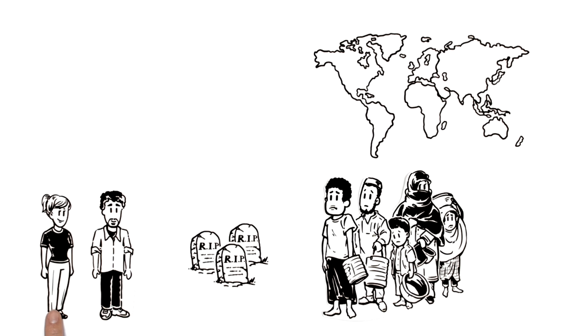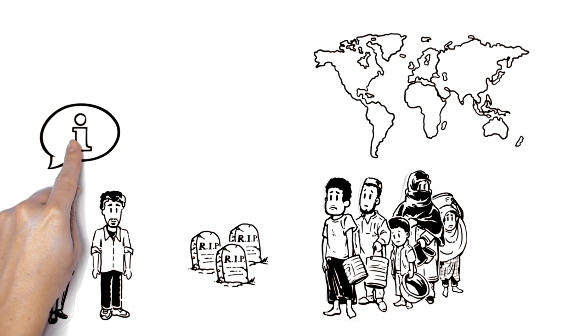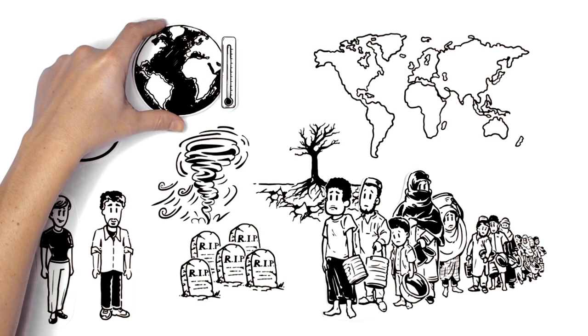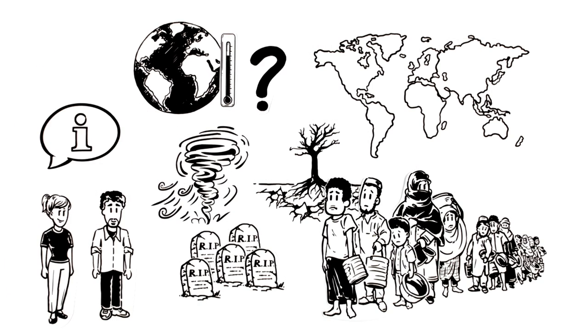Tom asks his friend Mary for advice. She explains that these extreme weather phenomena are getting worse due to changes in climate. But where does this warming come from?